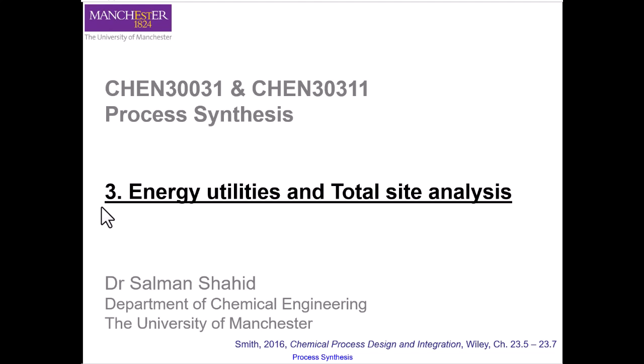This obviously reduces the number of steam producers that we need. Having one utility boiler for each chemical process on a total site would be a waste of capital, when a single utility boiler could service a number of chemical processes. We shall see how these chemical processes and their utility requirements can interact in a total site in this part of the lecture.